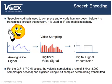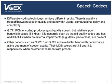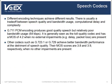Once converted into a digital signal, the voice stream is packetized into IP packets to be transmitted on the network. Different encoding techniques achieve different results, usually with a tradeoff between speech quality and bandwidth utilization, computational delay, and complexity. G711 PCM encoding produces good quality speech but relatively poor bandwidth usage at 64 kbps. It is generally seen as a toll quality codec and has a Mean Opinion Score of 4.2 when no external impairments are present. MOS is a commonly used voice quality metric that rates voice quality on a scale from 1 to 5, with 1 being the lowest.